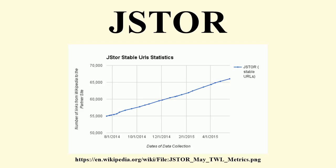In January 2012, JSTOR started a pilot program called Register and Read, offering limited no-cost access to archived articles for individuals who register for the service. At the conclusion of the pilot, JSTOR expanded Register and Read from an initial 76 publishers to include about 1,200 journals from over 700 publishers. Registered readers may read up to three articles online every two weeks, but may not print or download PDFs. JSTOR is also conducting a pilot program with Wikipedia, whereby established editors are given reading privileges through the Wikipedia Library, as with a university library.